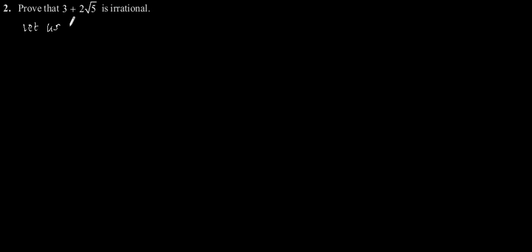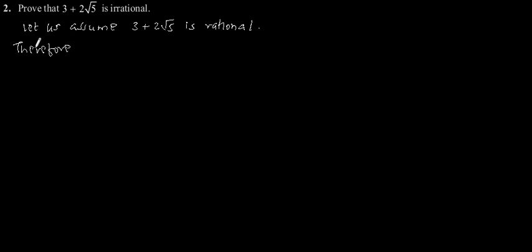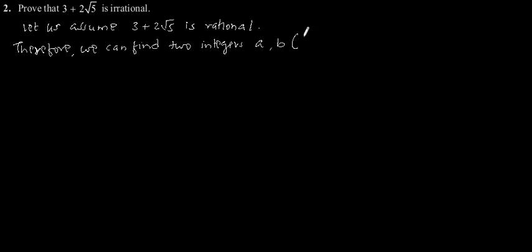Let us assume 3 plus 2 root 5 is rational. Therefore, we can find two integers, let us say a and b, where b is not equal to 0, such that 3 plus 2 root 5 is equal to a upon b.